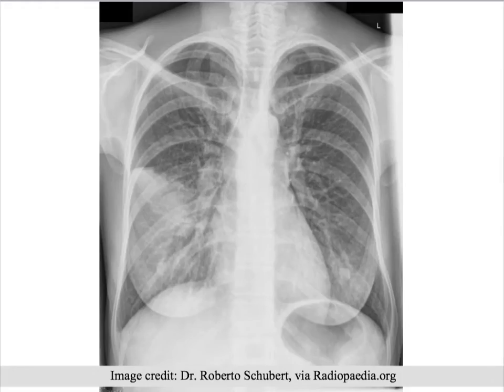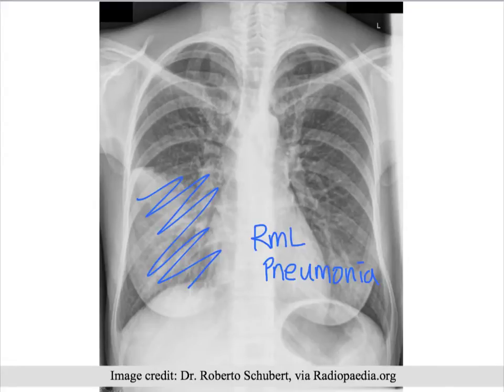What about this chest x-ray? Can you see where the infiltrate is? It's also on the right side, but this time it's on the right middle lobe. This is a right middle lobe pneumonia.